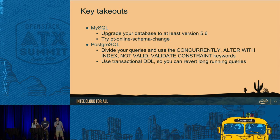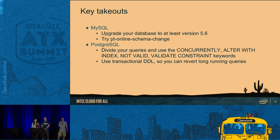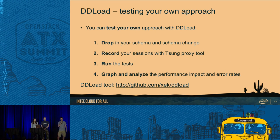Key takeaways: you should definitely upgrade your database if you're running MySQL 5.5. You can also try pt-online-schema-change. For Postgres, you should divide your queries and use CONCURRENTLY, ALTER with index, NOT VALID, VALIDATE, and CONSTRAINT keywords. You could also use transactional DDL to revert long-running queries — so if you introduce a change that starts to block your service, you can revert it and try again when your service is less loaded. You can also try the DDL load test to test your own approach: drop in your schema, record some sessions with a proxy to simulate real workload, run the tests, graph and analyze the reports, and see if there are any errors.